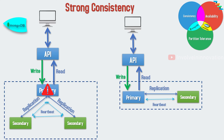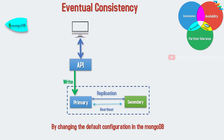Through MongoDB's write concern, you can ensure write operations are propagated to a majority of replicas in the cluster. With MongoDB 5.0, write success is acknowledged in the application once it has been committed and persisted to disk on the majority of replicas. Secondary nodes can accept read operations by modifying the default configuration, which makes MongoDB an eventually consistent database since there can be times when secondary nodes have out-of-sync data.